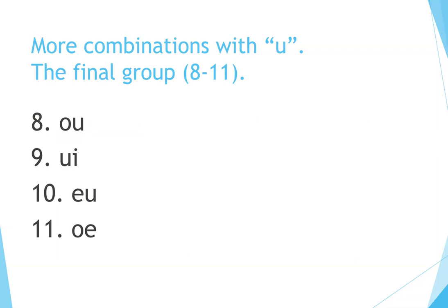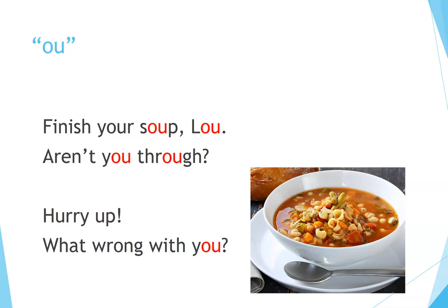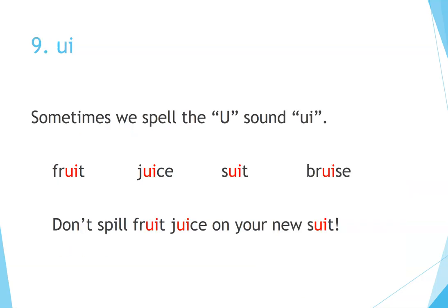More combinations. The final group — 8 through 11. Number 8: OU. Sometimes we spell the OO sound OU: soup, through. Some people abbreviate this with a single U. Number 9: UI. Sometimes we spell the OO sound UI: fruit, juice, suit, bruise. Finish your soup — aren't you through? Hurry up, what's wrong with you?